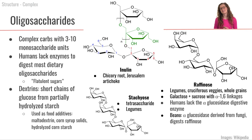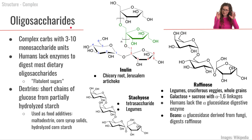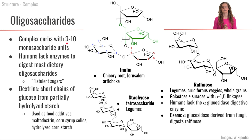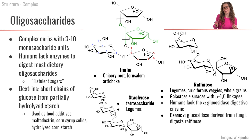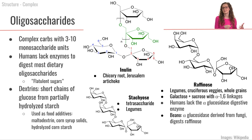Let's move on to the complex carbohydrate section and talk about oligosaccharides. Oligosaccharides are slightly larger, composed of between three to ten monosaccharide units bound together. For many oligosaccharides in our diet, we don't have the enzymes to break them apart, which is why many are referred to as flatulent sugars — some of our microbes can break them down, and in the process of that microbial metabolism they produce gas.